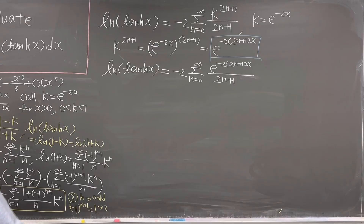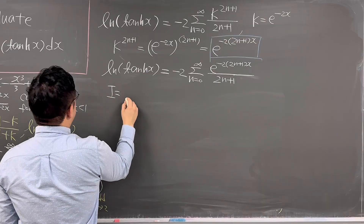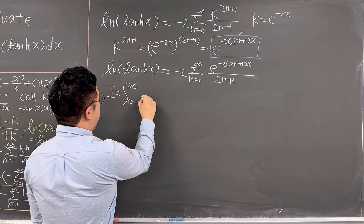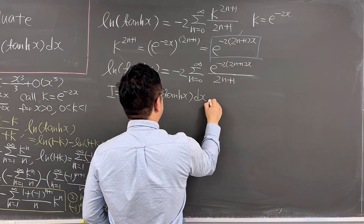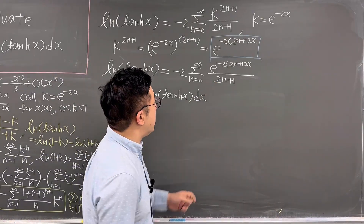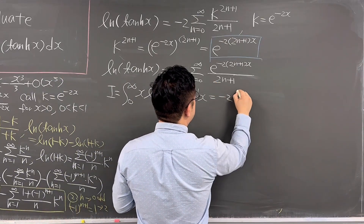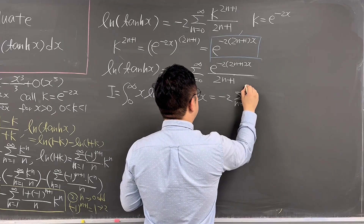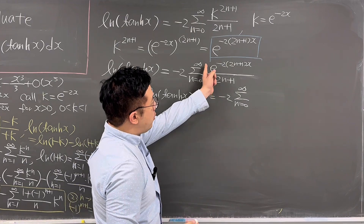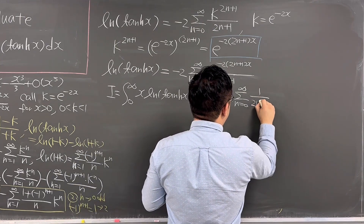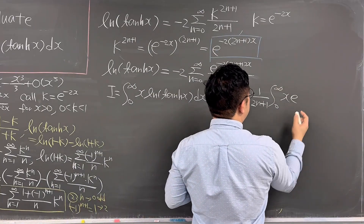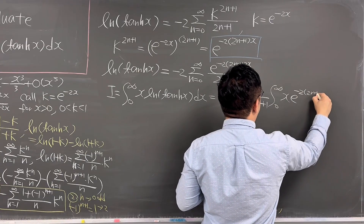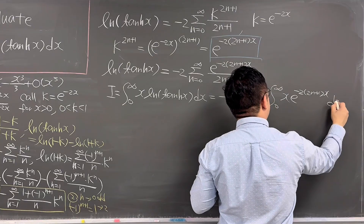Let's go back to our integral. Let me call this integral I. Integral I is the integral from 0 to infinity of x times ln(tanh x) dx. We can rewrite this as negative 2 times summation from n equals 0 to infinity of 1 over 2n plus 1, times the integral from 0 to infinity of x times e to the power of negative 2 times 2n plus 1 times x, dx.